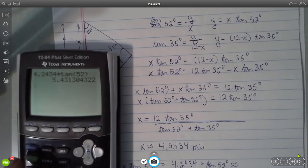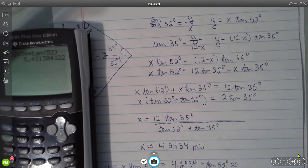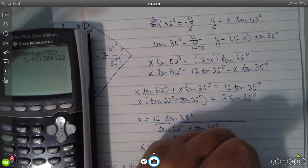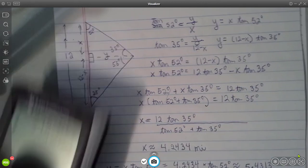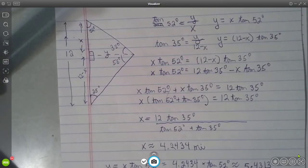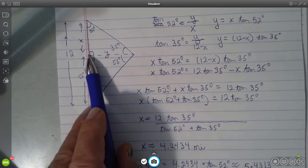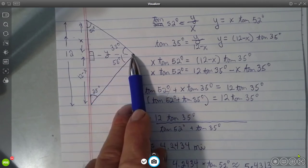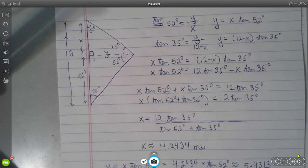And that gives us 5.4313. Okay, so now we know this one, this distance is 5.4313, and that actually answers one of the questions. How far is the ship from the shore? 5.4313 miles.